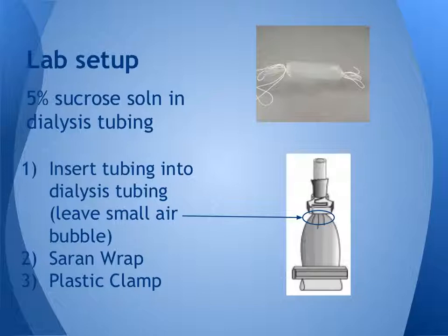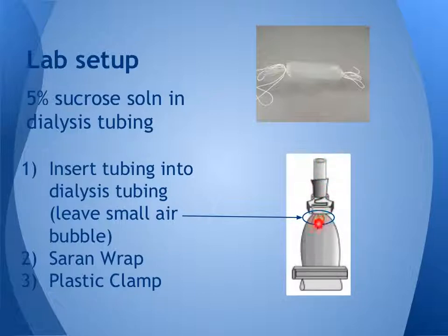The setup had 5% sucrose solution — sugar water — inside of the tube, and then we placed that in a distilled water environment in a beaker. Using the gas pressure sensor, we took the tubing attached to the sensor and inserted it into the dialysis tubing with the sugar solution. We put saran wrap around the outside and a plastic clamp to seal the closed chamber. One key step was to leave just a small air bubble there, which really helps in data collection with the gas pressure sensor.